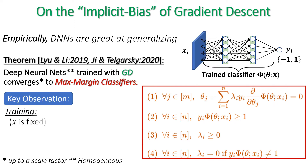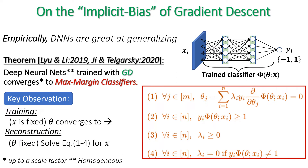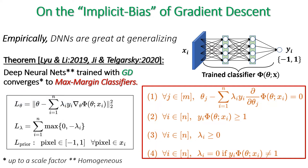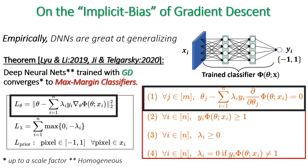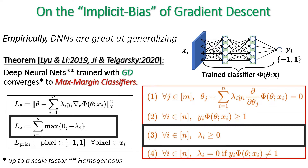Our key observation is that given a trained model with fixed parameters that converge to this solution, the same set of equations can be optimized but with respect to the samples X_i, thus reconstructing part of the samples from the training set. To solve this optimization problem, we formulate our loss function accordingly. L_theta corresponds to equation 1 and L_lambda to equation 3.